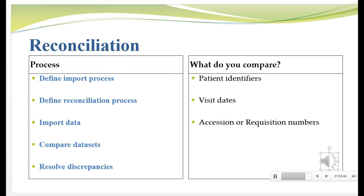Laboratory samples also have to be tracked, just like we track case report form data. Labs will typically assign either an accession or requisition number — a unique identifying number for that sample or record. You can often enter the accession number in your clinical database and then compare that as well, giving you another layer of comparison. If you don't have the accession or requisition number in both data sets, then you're essentially just reconciling your patient identifiers and visit dates.